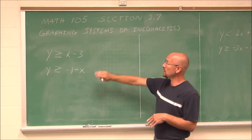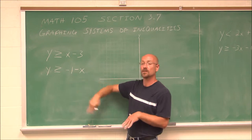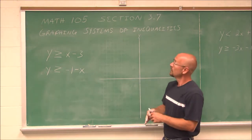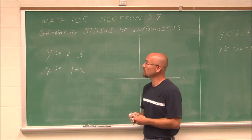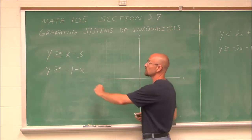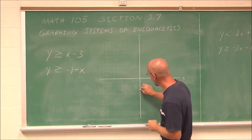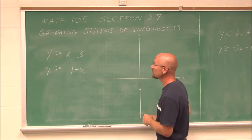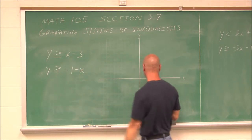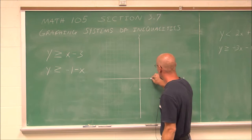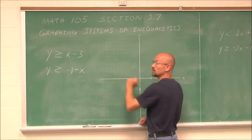So if we jump right into the example, we're going to graph both of these lines one at a time. We have y is greater than or equal to x minus 3. To graph that, I like to use the intercepts. The y-intercept would be negative 3, and the x-intercept when y is 0 would be positive 3. So now I have two points and I'm ready to graph this particular line.